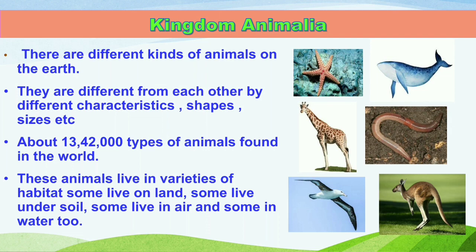About 13 lakh 42,000 types of animals are found on this world, and these animals live in different types of adaptation or habitat. Some animals live on land, some live under soil, and some others live in air too. According to their habitat, these animals may be terrestrial, aquatic, or aerial, and on the basis of their body structure they may be different also.